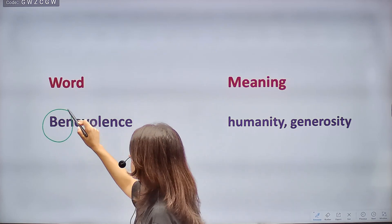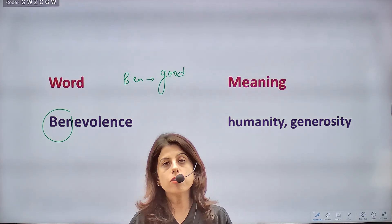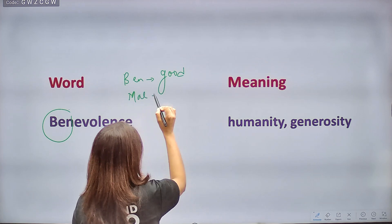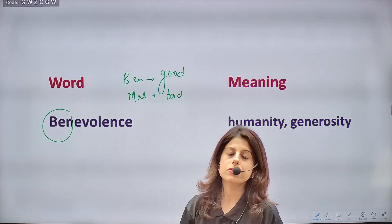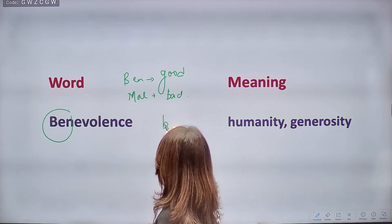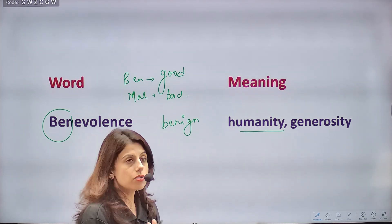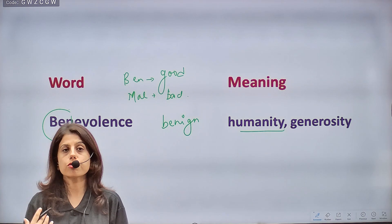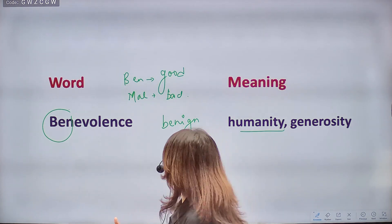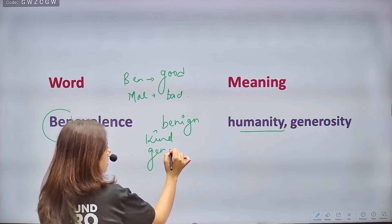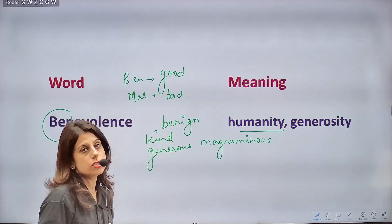Next is BENEVOLENCE — a very important word that comes commonly in exams. Root word 'ben' means good. The opposite root is 'mal' which means bad. So benevolent means a good, kind-natured person. Words beginning with 'ben' are positive. Synonyms of benevolence: kindness, humanity, generosity, magnanimous (a person with a big heart). Benign is another word meaning kind.